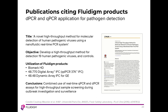Extending this into humans, there was a publication from 2016 also from a group in France titled A Novel High-Throughput Method for Molecular Detection of Human Pathogenic Viruses Using a Nanofluidic Real-Time PCR System. The authors developed a high-throughput method for detecting 19 human pathogenic viruses and controls simultaneously using the Biomark HD, the 48.48 dynamic array IFC, and the 48.770 digital array IFC. They concluded that the combined use of real-time PCR and digital PCR provided high-throughput sample screening during an outbreak investigation and surveillance — definitely applicable to coronavirus, and proof of principle for extending to outbreaks such as COVID-19.